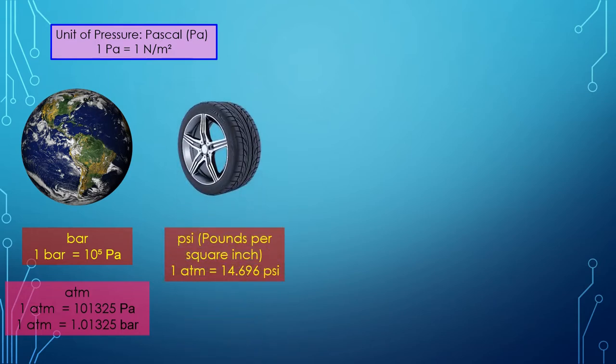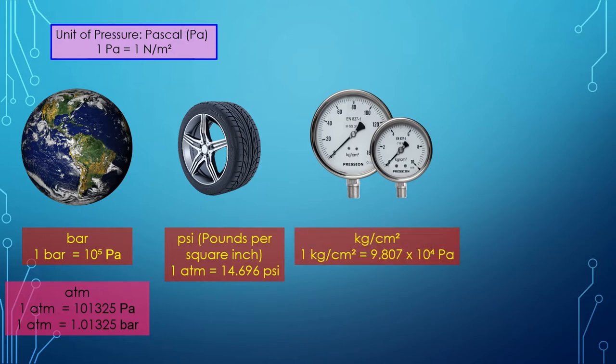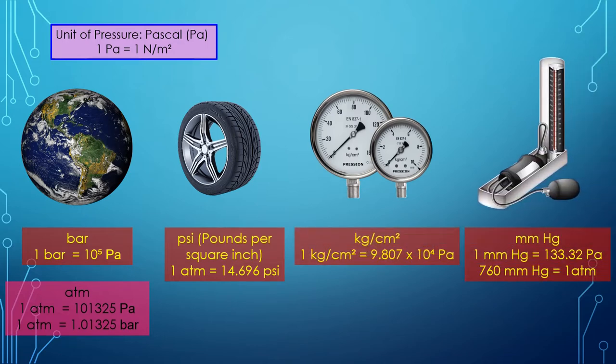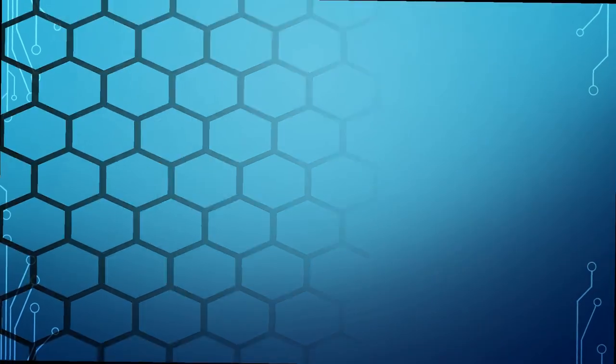Another unit is kg per centimeter square used in industries in different flow meters, and finally millimeter of mercury which is used in blood pressure measuring devices and barometers. When you measure the air pressure in a car tire it shows 32 psi.